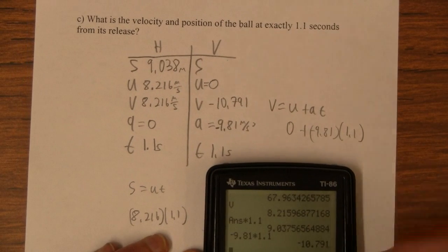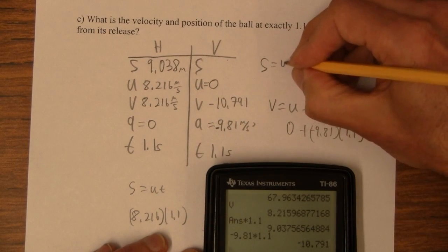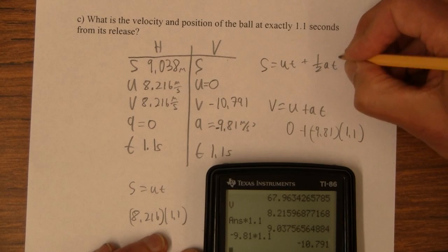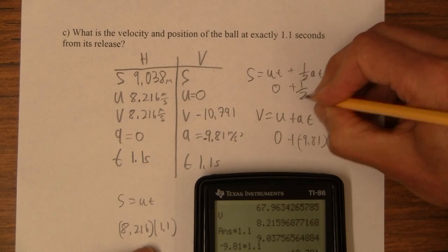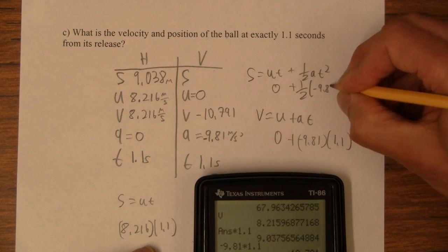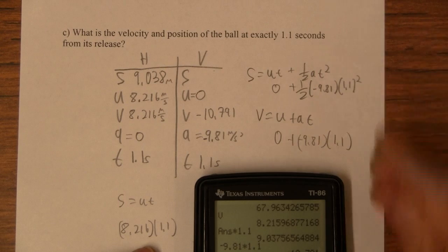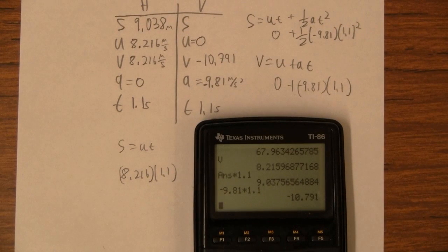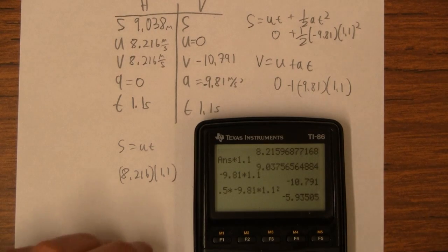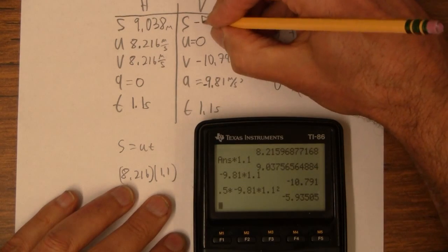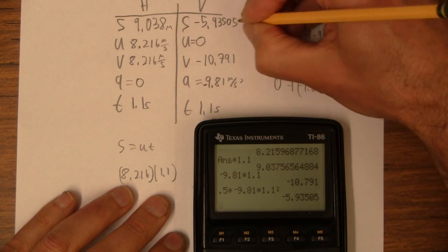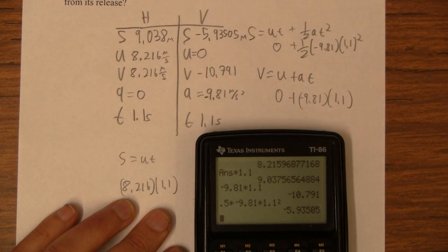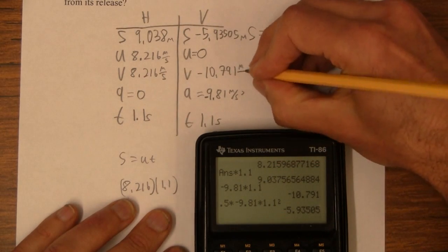And then let's figure out our displacement here. I'm going to use S is UT plus 1/2 AT squared. So that's 0 plus 1/2 negative 9.81 times 1.1 squared. So 0.5 times negative 9.81 times 1.1 squared. That's negative 5.935. And again, I'm not rounding because I'm not quite done with the problem, right?